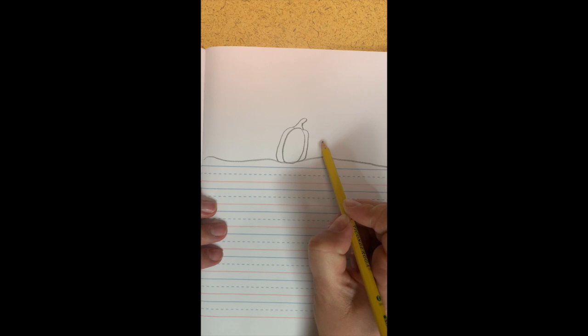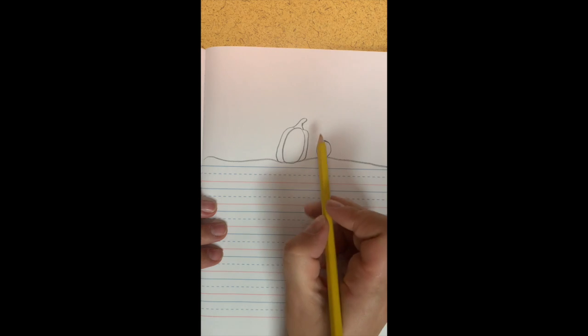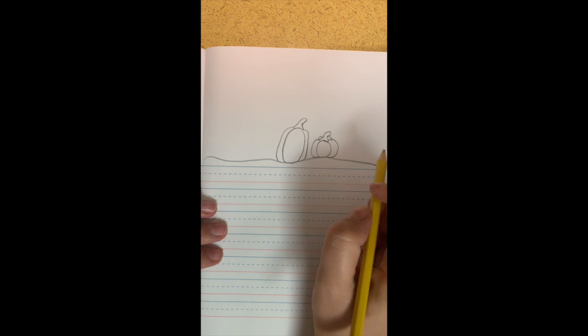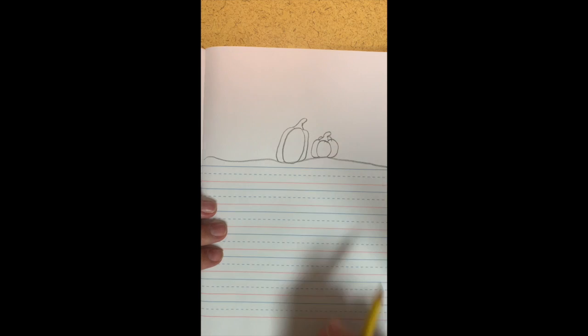Then down here I'm going to start another one. This one's going to be a smaller pumpkin. Remember we did that circle in the middle and then you're going to come up and out here, up and out here, in, in, top little loop. Two pumpkins.